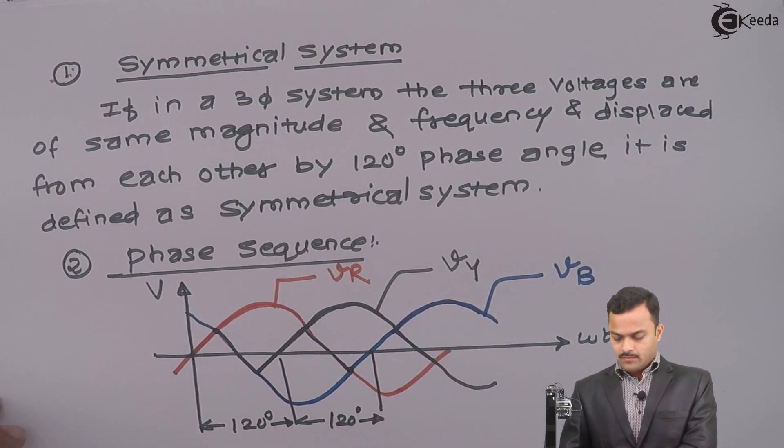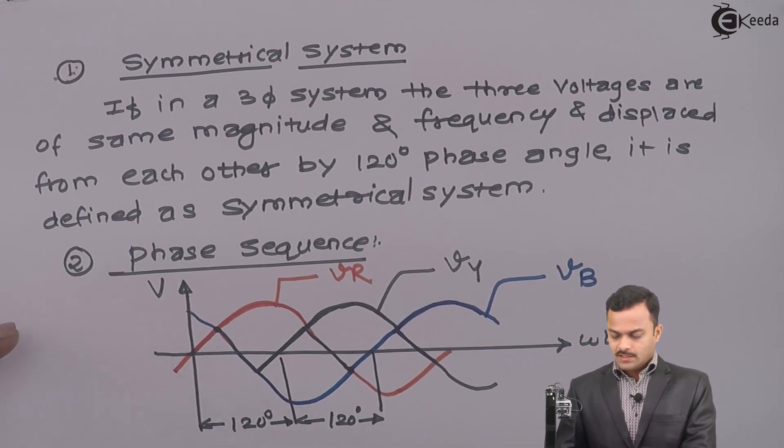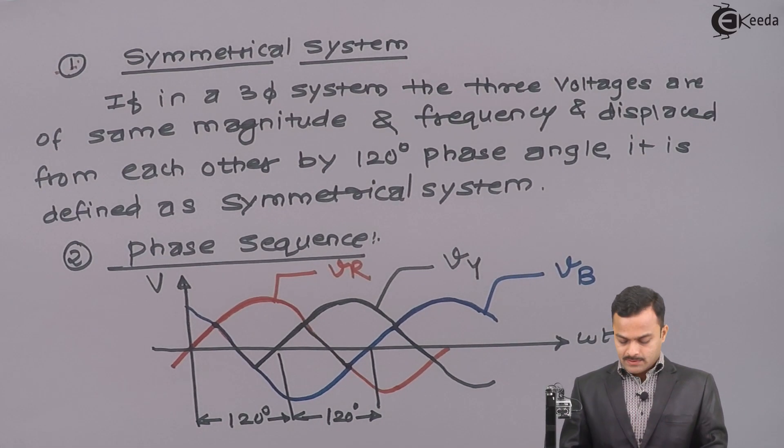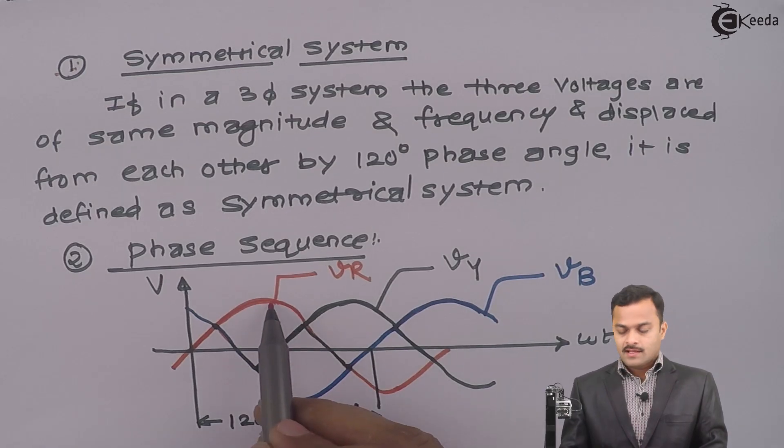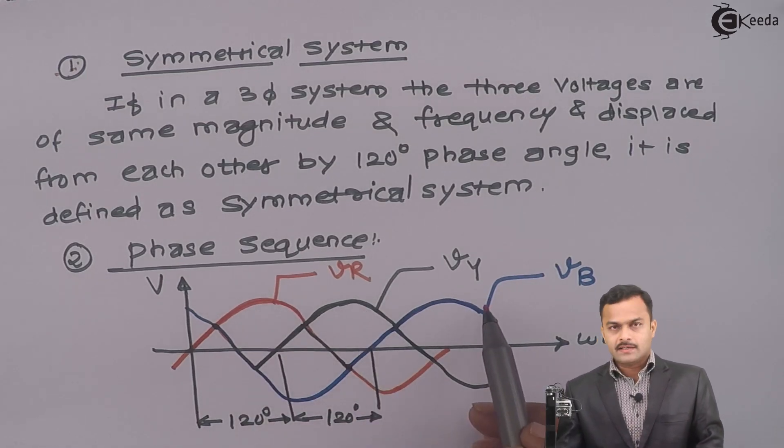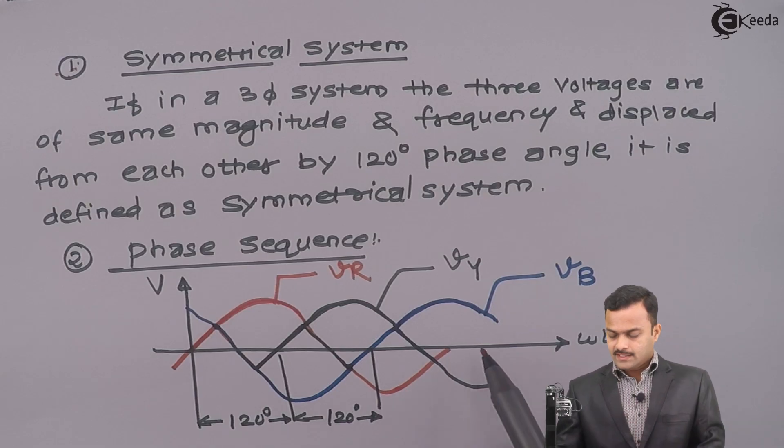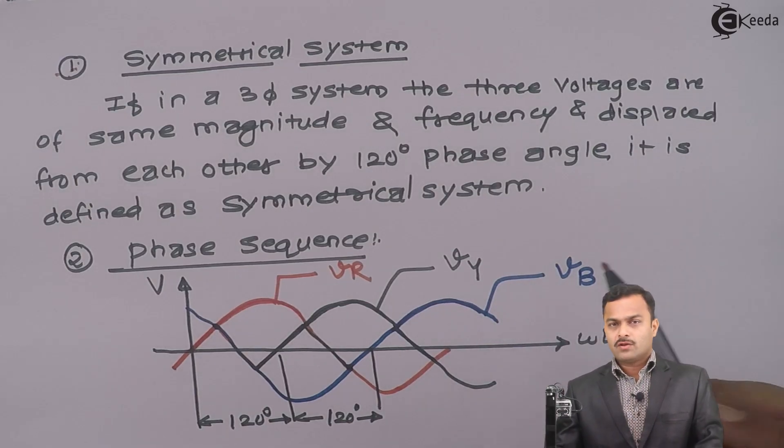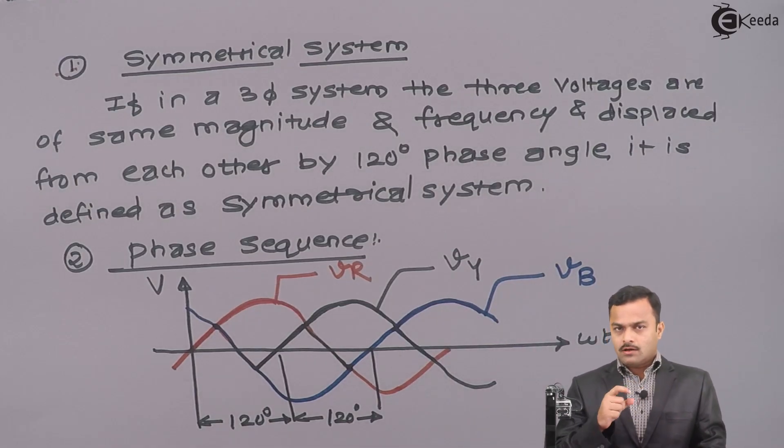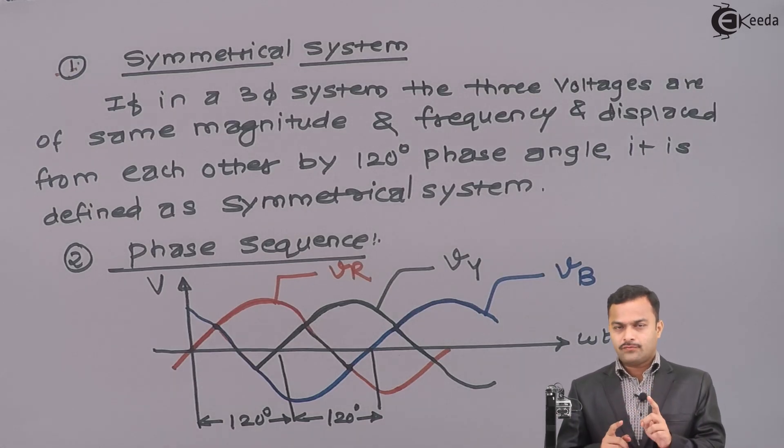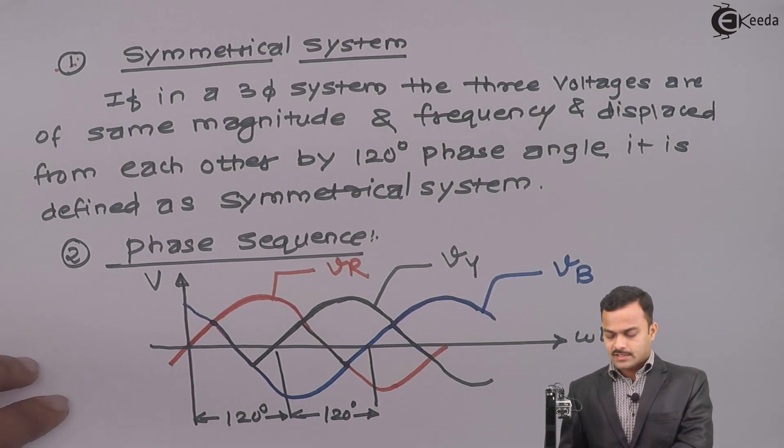Now, with respect to this waveform, we will define what is the phase sequence. So, see properly here. Vr will attain the maximum value first, then Vy, and then Vb. And if I extend this further, it will be again Vr, Vy, Vb. So, this thing is happening in sequence. R first, then Y, and finally B. So, that is called as a phase sequence.